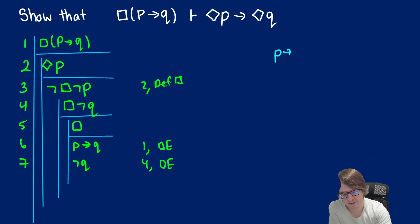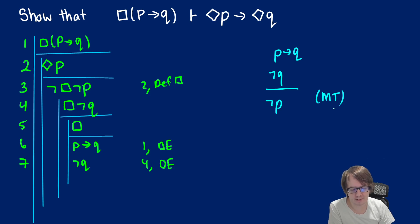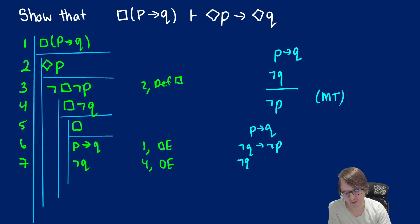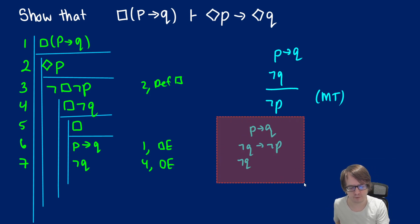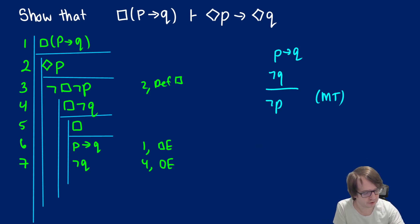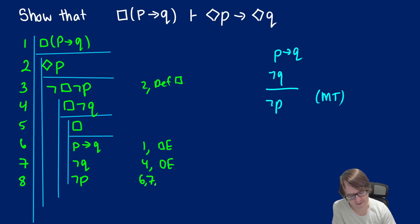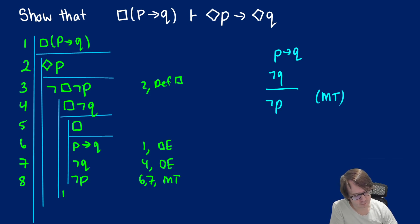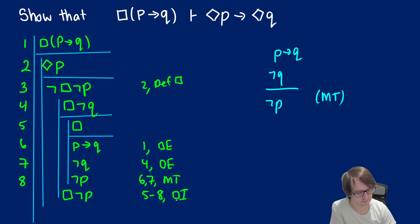We have a rule: if we have p → q and not q, we get not p — this is modus tollens, abbreviated MT. We can see this via the contrapositive: p → q is equivalent to not q → not p, so if we have not q we get not p. We proved this in the propositional logic section, so we use that theorem. This gives us not P from lines six and seven with modus tollens. We then pull out box not P from lines five to eight using box introduction.